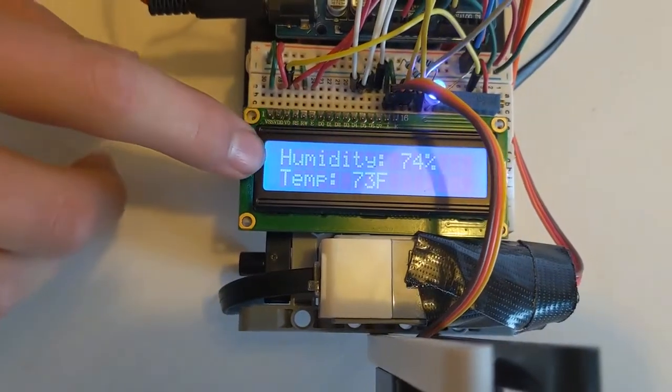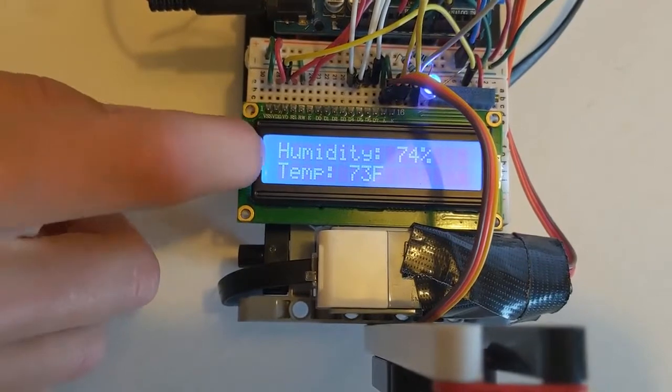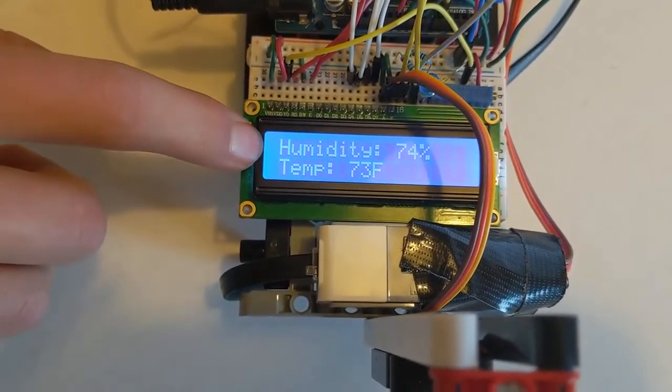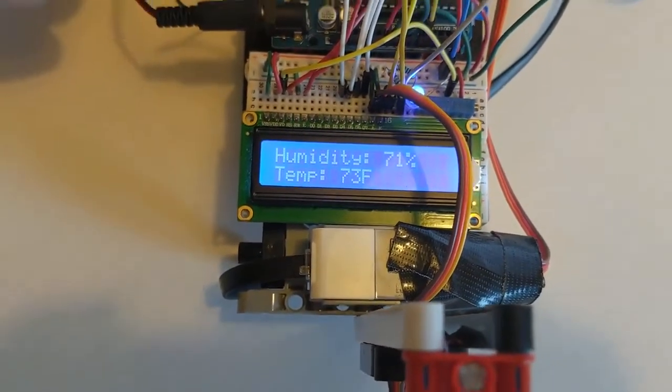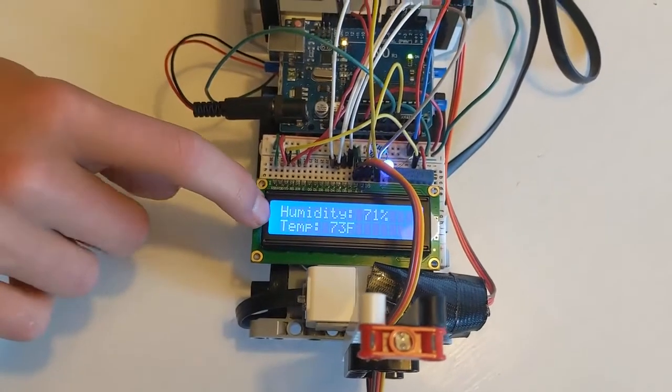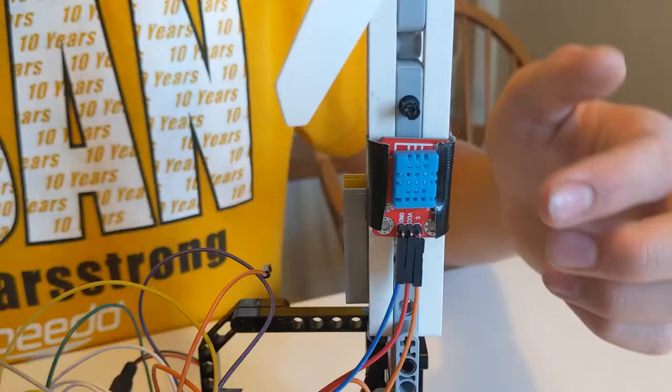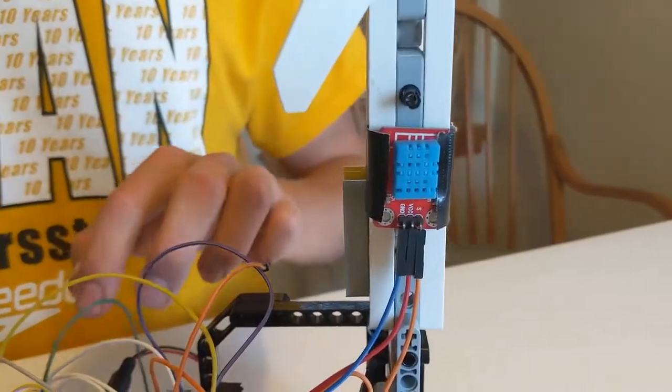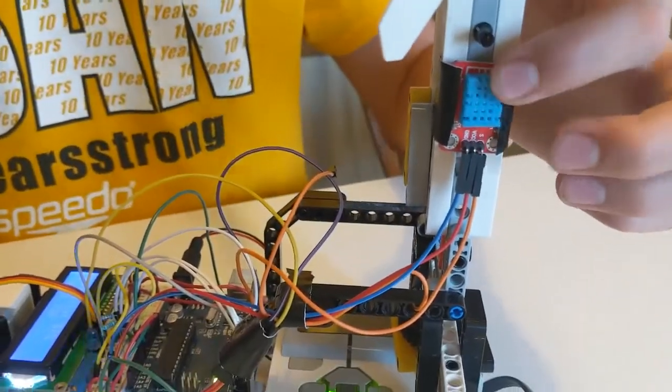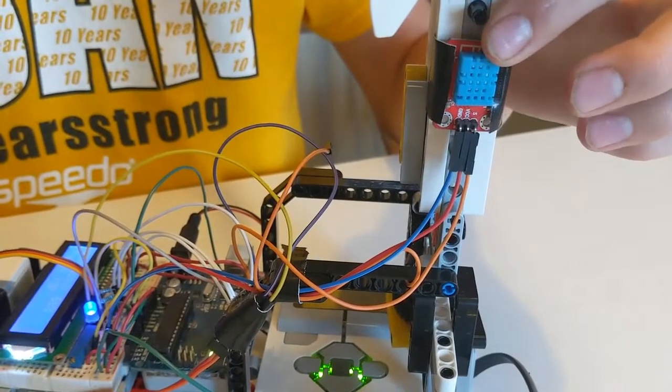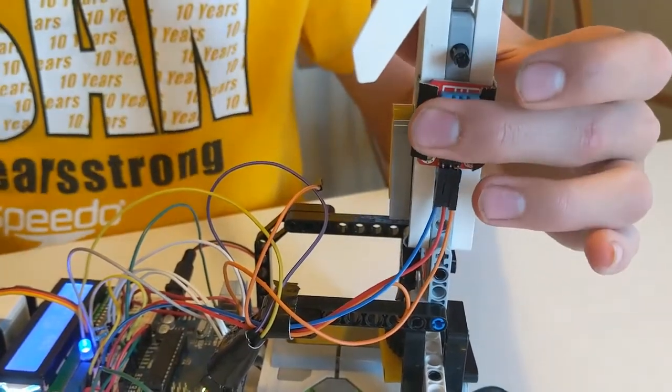I've also added a 16x2 LCD screen to help make sure that the EV3 is always synced up with the Arduino. If you're wondering what the Arduino and the sensor came from, it came from an Arduino kit that I got a while back. You can find them on eBay and Amazon and all over the web.